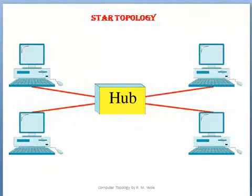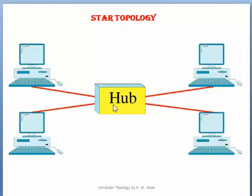In star topology, all the devices are connected to a centralized management device like a hub or switch. Every single device is connected to this centralized device with the help of a separate cable. So if one cable fails, the entire network will not collapse — that is the key advantage of star topology.